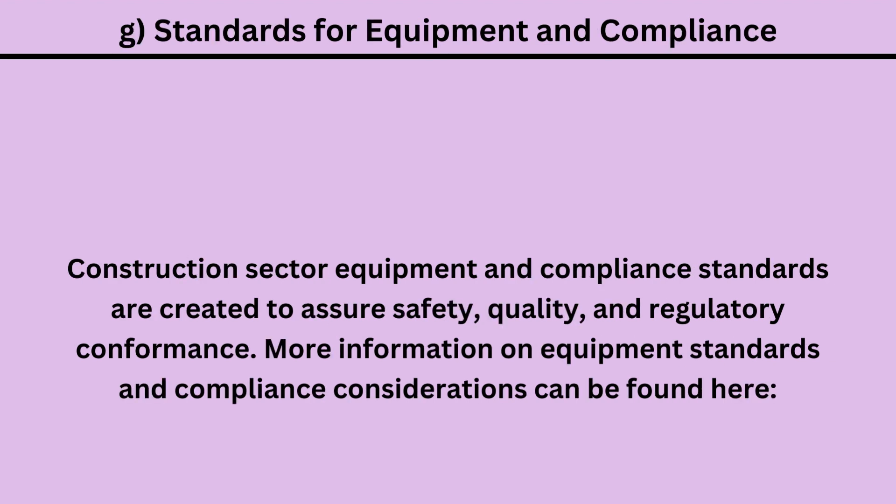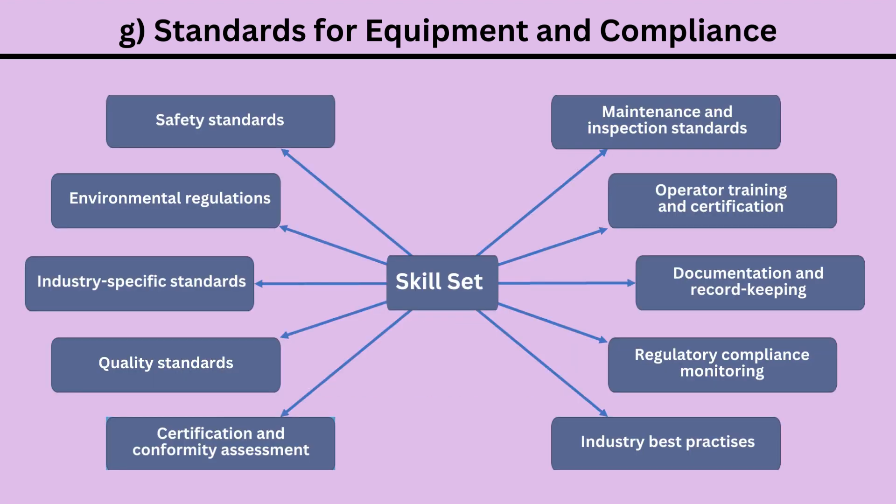G. Standards for equipment and compliance. Construction sector equipment and compliance standards are created to assure safety, quality, and regulatory conformance. Key considerations include: 1. Safety standards. 2. Environmental regulations. 3. Industry-specific standards. 4. Quality standards. 5. Certification and conformity assessment. 6. Maintenance and inspection standards.